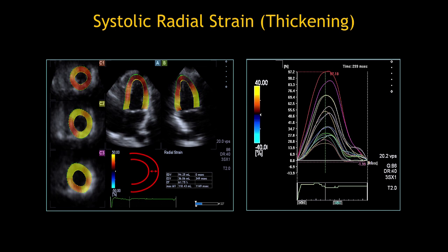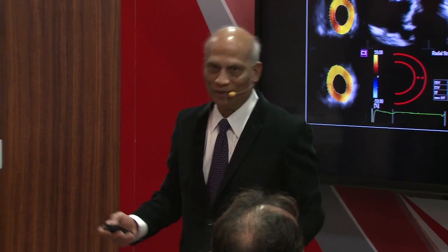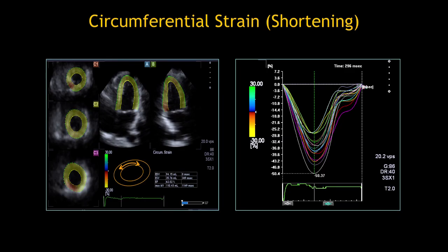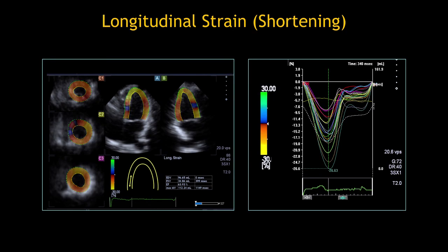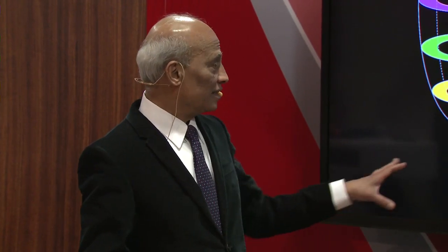Different segments are not identical in their contraction because for the left ventricle to pump output through the LV outflow, every region cannot contract identically — the heart is well designed. Similarly, circumferential and longitudinal strain parameters are displayed, and in addition to that you get conventional data on LV diastolic volume, systolic volume, and ejection fraction.